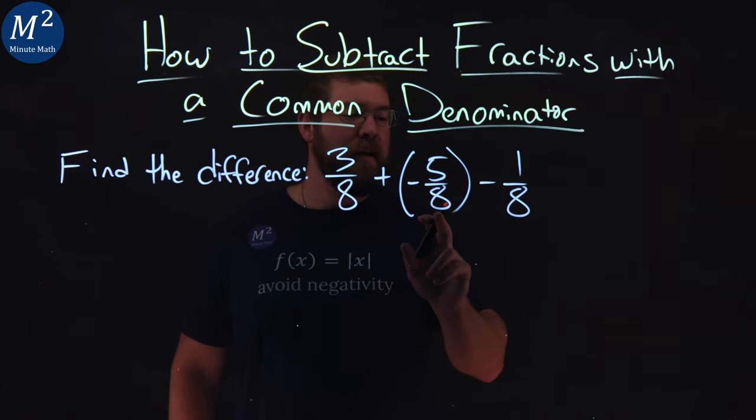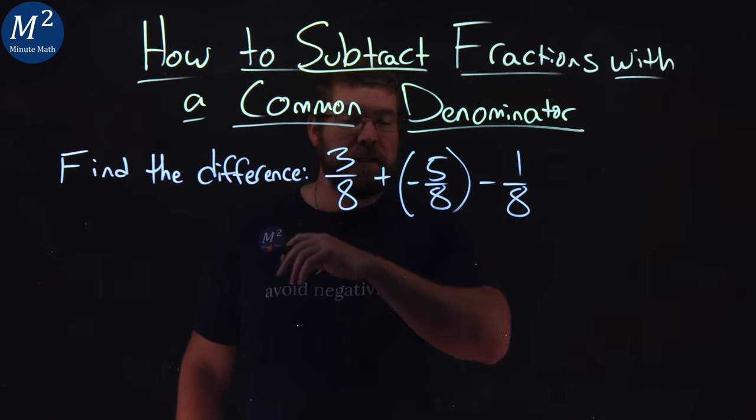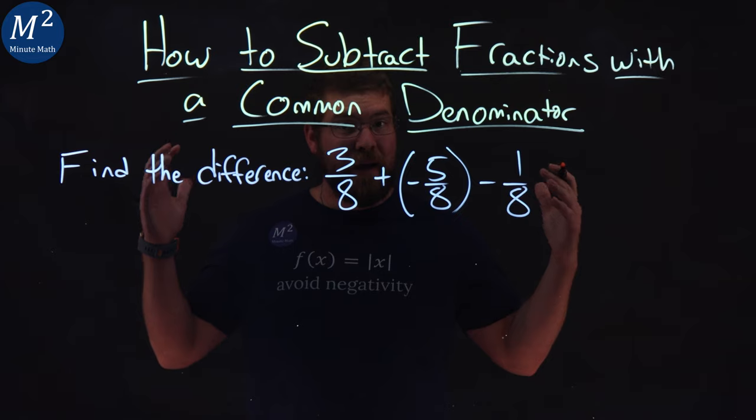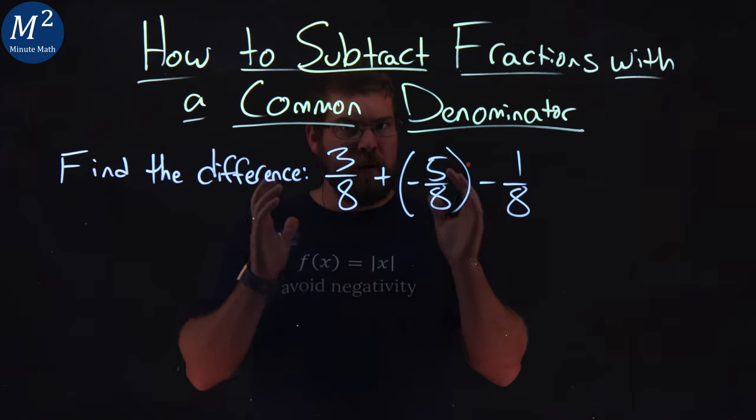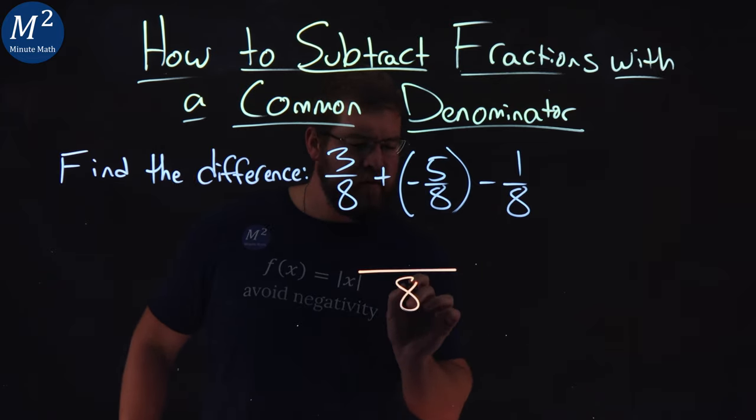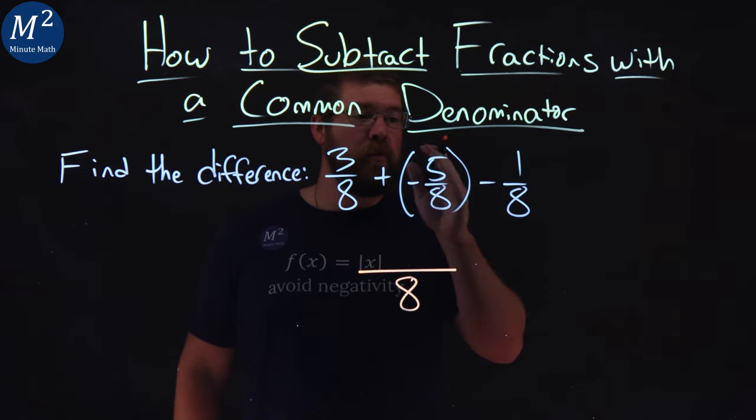Notice we have an 8 in each one of these denominators, meaning we can combine these fractions to be one large fraction. So, let's keep 8 in the denominator and let's look at the numerators.